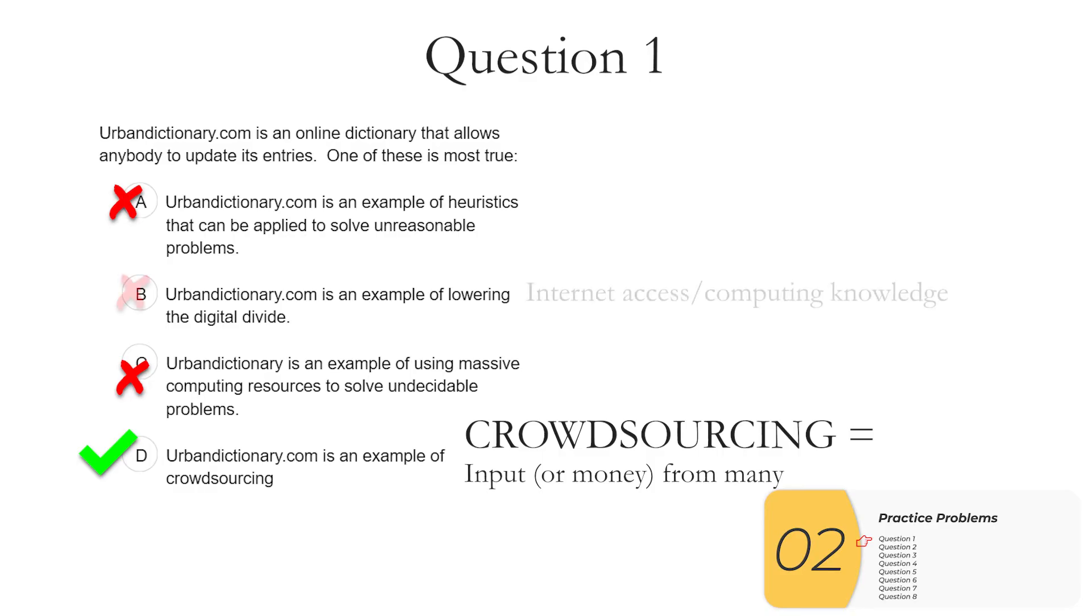The only one here that might be a little bit tricky is the digital divide. Remember, the digital divide has to do with internet access or computing knowledge and what we do to reduce that gap between rural and urban, old and young, that kind of thing. Or education about urban words is not really what we're looking for when we talk about the digital divide. So our answer is D.